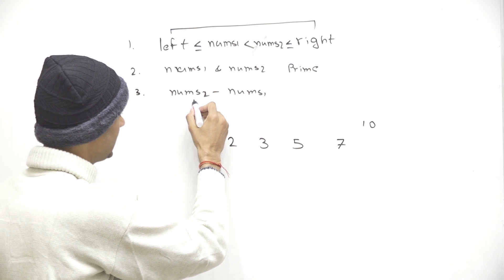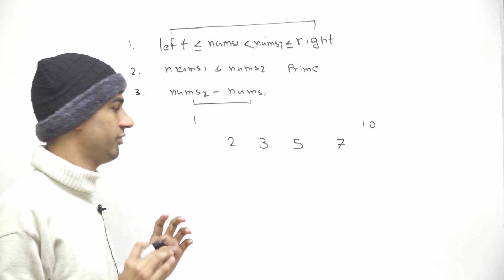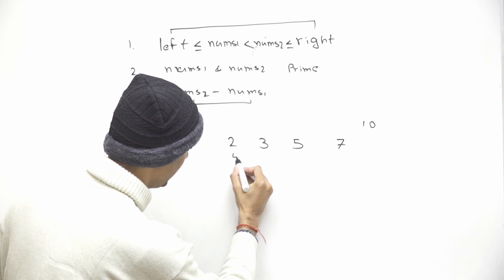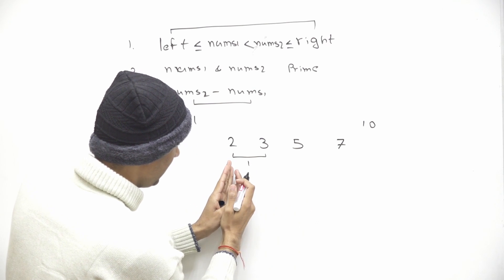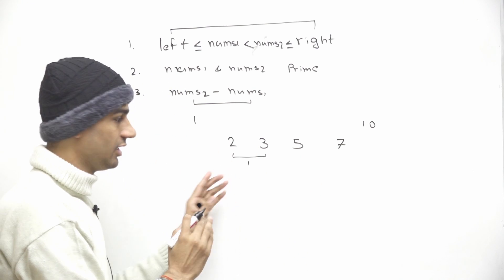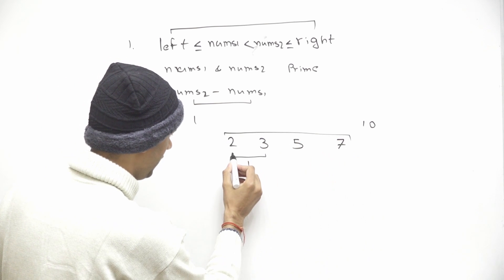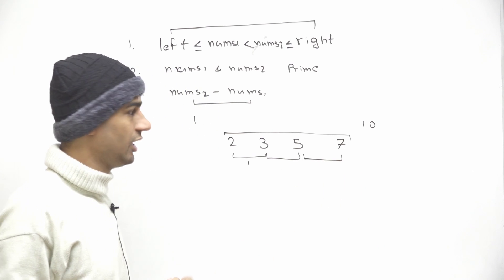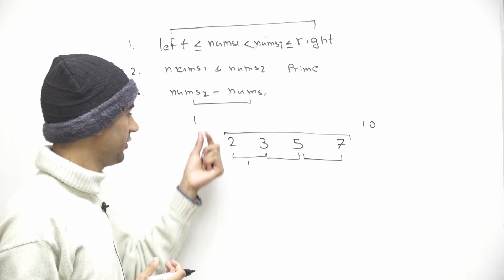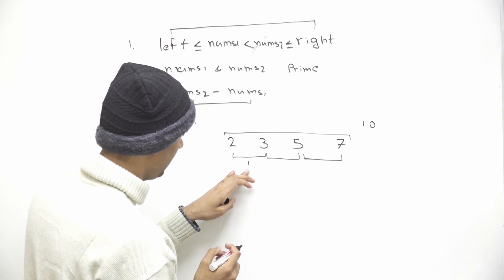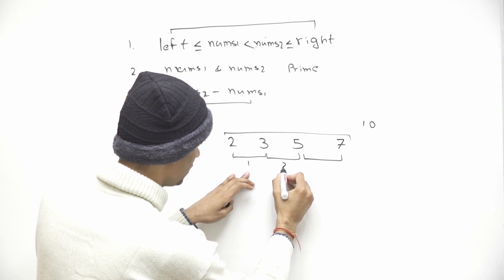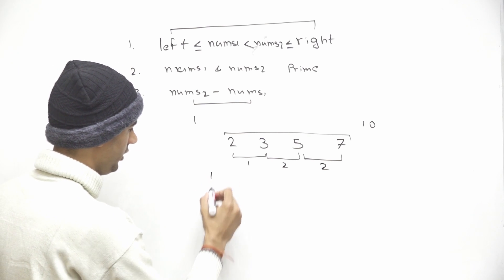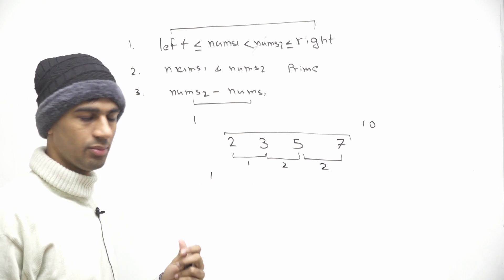Now we have to come up with a pair which has the minimum difference. Which elements can have a minimum difference? The adjacent ones. Like 2 and 3 have a difference of 1, but if we pick any other element with 2 then we will get a difference greater than 1. So we consider adjacent pairs: 2 and 3 give difference 1, 3 and 5 give difference 2, and 5 and 7 give difference 2. So the minimum difference is 1, and this is what we have to return.